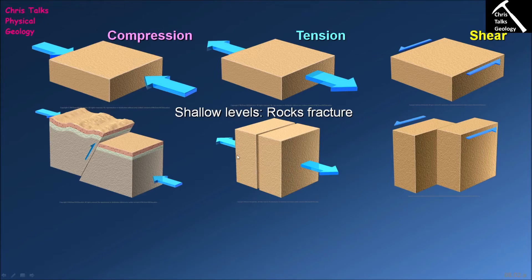What can also happen in tensional settings is that once the rock fails, one block can move relative to the other — the block on the right can drop down relative to the block on the left. For brittle deformation related to shear stresses, one side of the block wants to move to the bottom-left and the other to the top-right. The stress focuses down the center until the block fails, and the two resulting blocks simply move past each other.